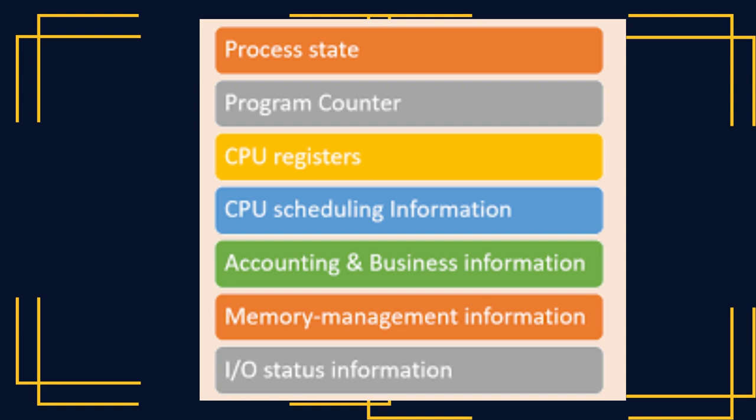Scheduling Algorithms determine the order in which processes get to run on the CPU. Preemptive Scheduling — Shortest Job First: this algorithm selects the process with the shortest burst time first, aiming to minimize the average waiting time and provide optimal execution time. If a shorter job arrives while another job is already running, the currently running job might be interrupted, or preempted, to allow the shorter job to run. Round Robin: this algorithm allocates CPU time in fixed time slices, called a quantum, to each process in a circular manner. Each process gets a chance to run for a predefined time, and then the CPU moves to the next process in line. This ensures fair execution and prevents any process from hogging the CPU. If a process doesn't finish within its time quantum, it's moved to the back of the ready queue to wait for its next turn.